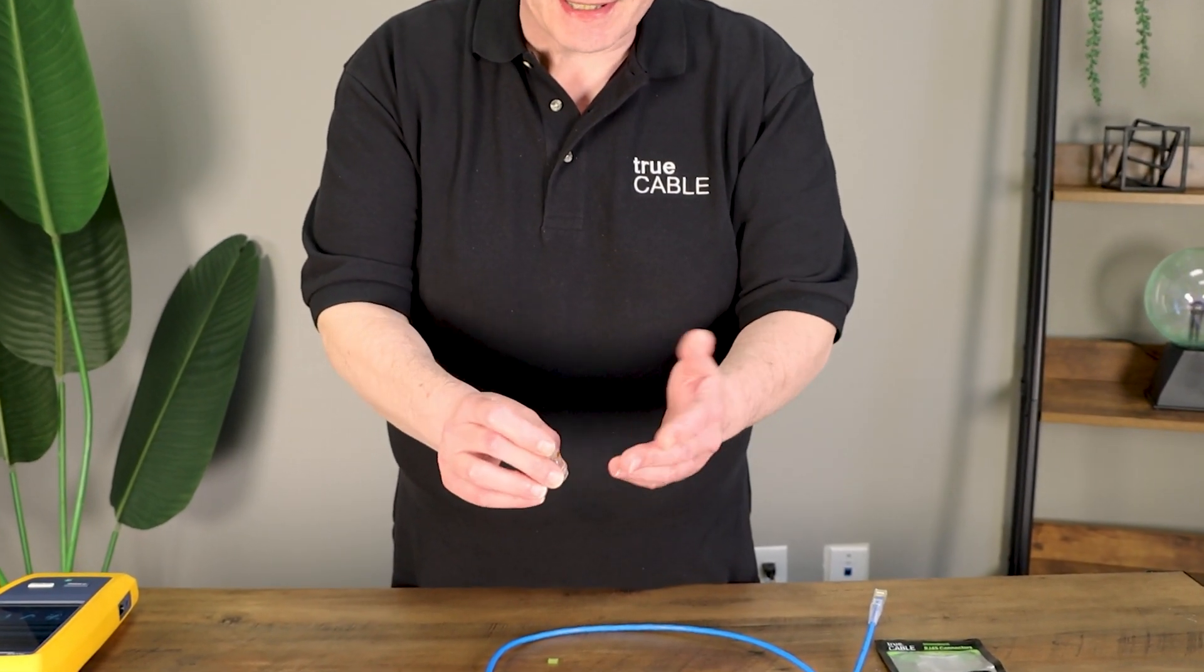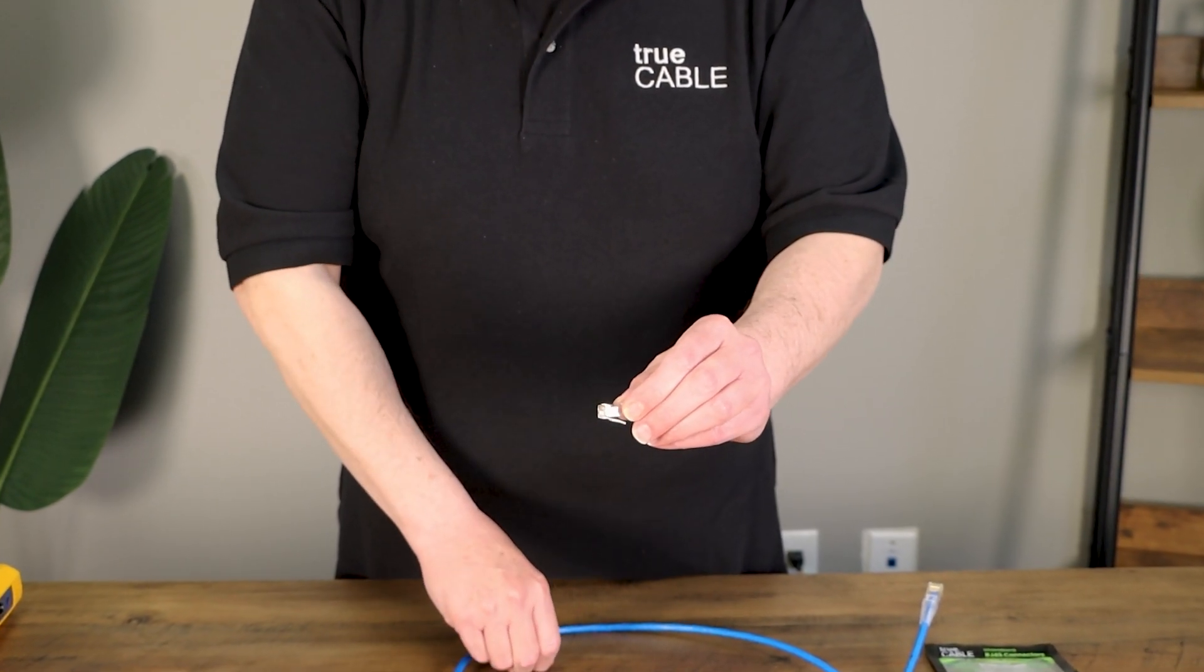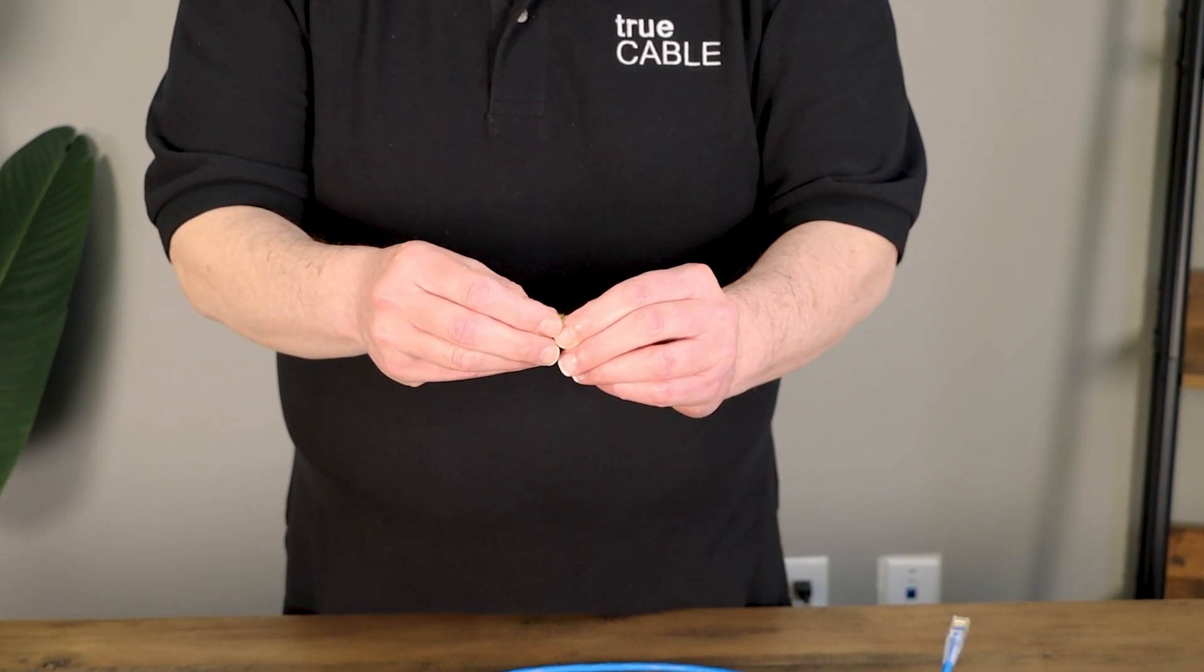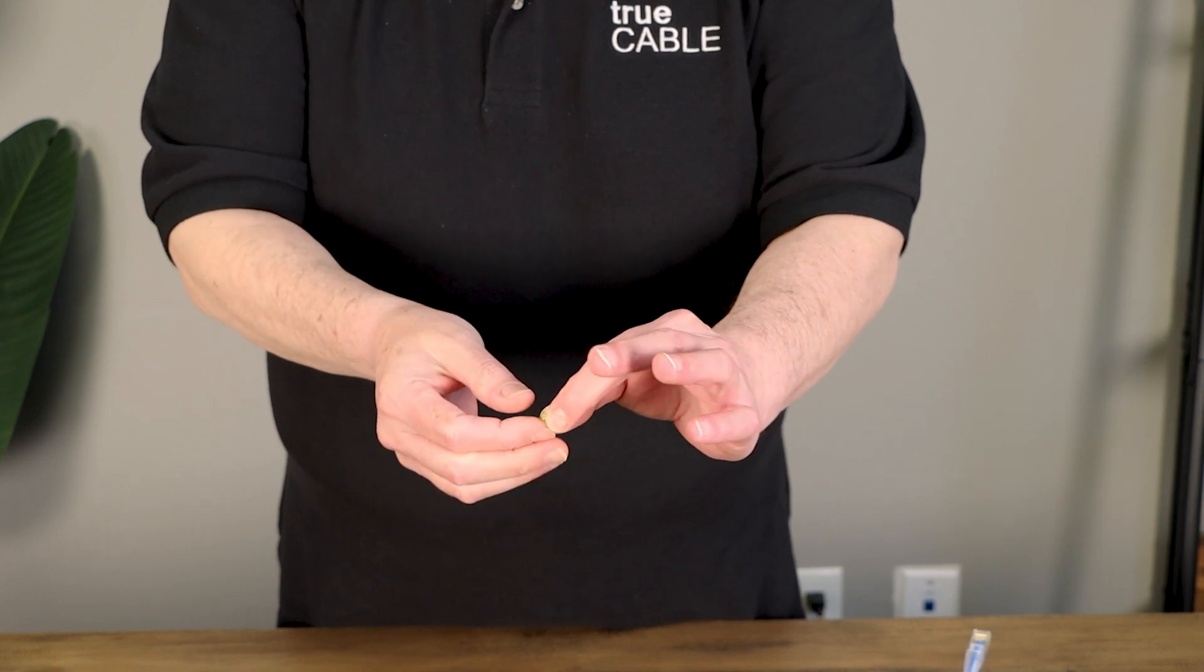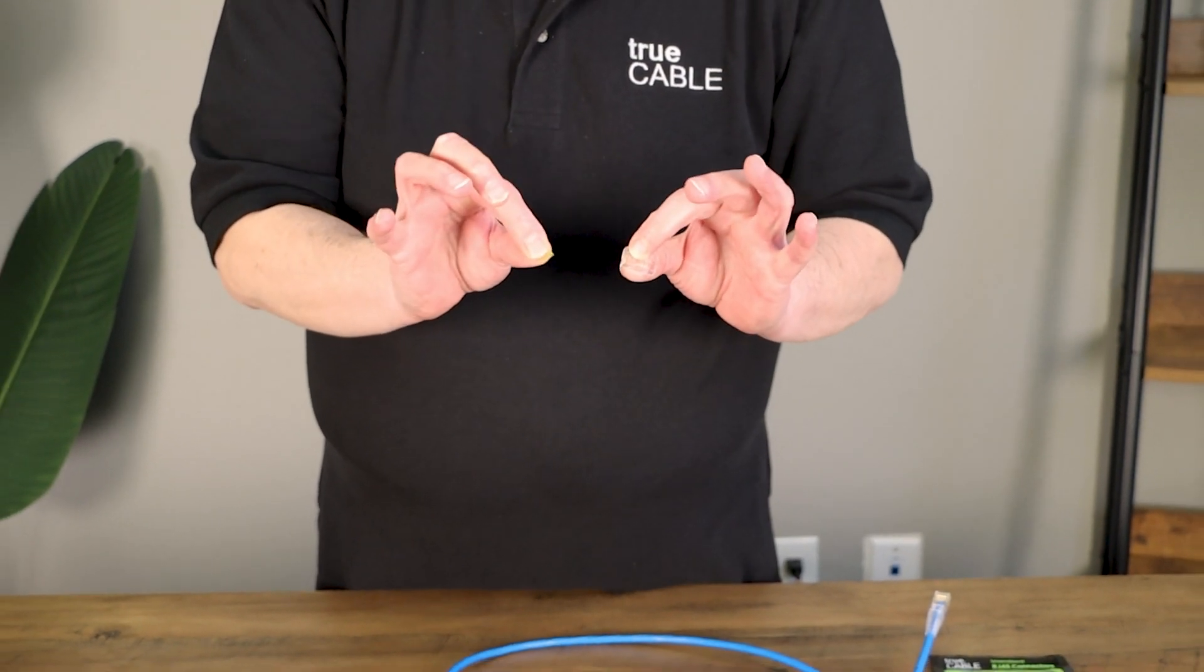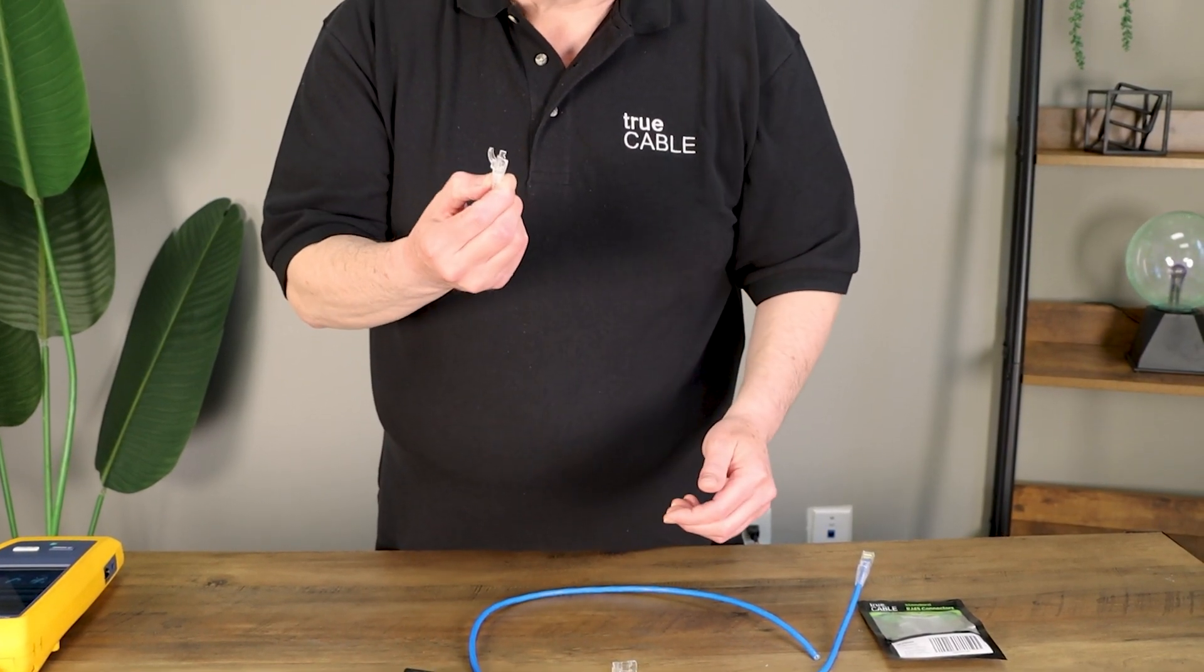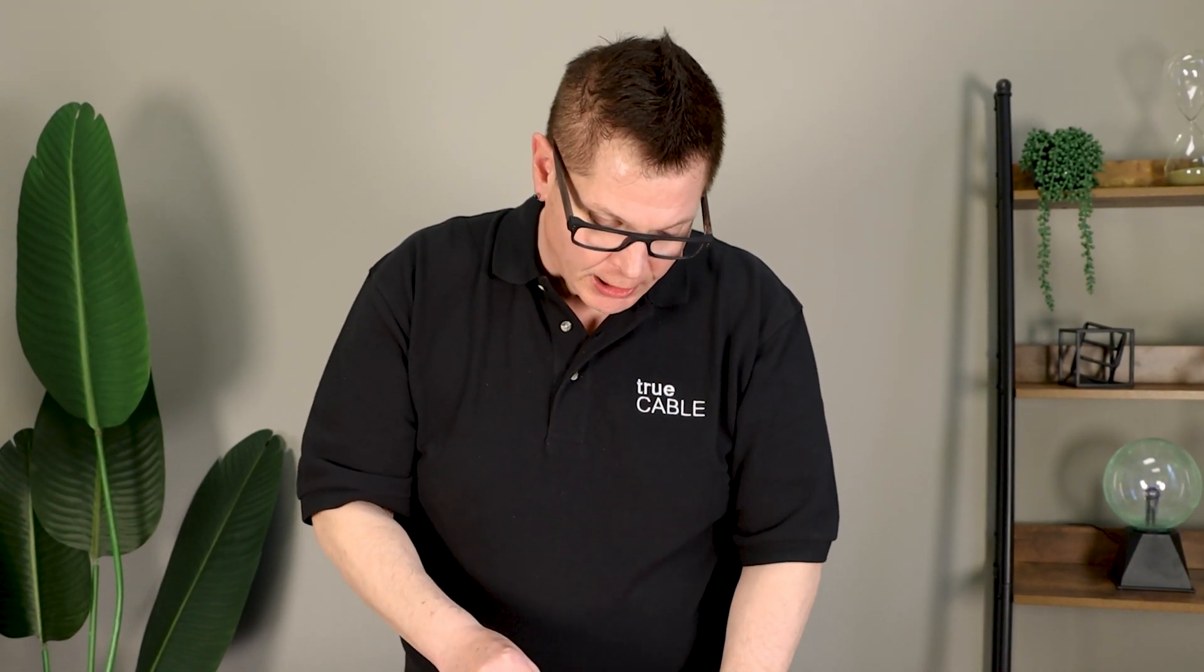So we have what's known as a solid nose, it's a solid nose standard RJ45 8P8C plug. And the way it works is there's a load bar, and it is position sensitive, which means that it only goes into the plug one way. You will put the conductors through the load bar, flush cut, and then put the entire assembly into the plug. Of course, we also want to use a strain relief boot. A large cut-to-fit is the proper strain relief boot to use with our category 6 cable along with this 6/6a load bar plug.